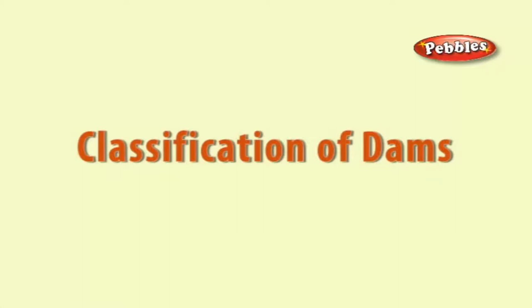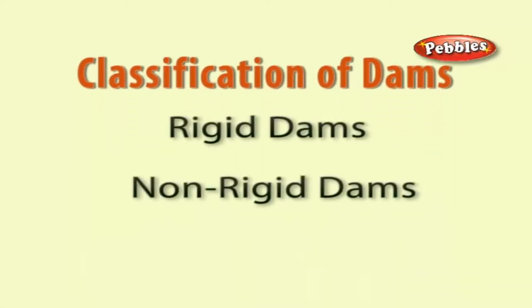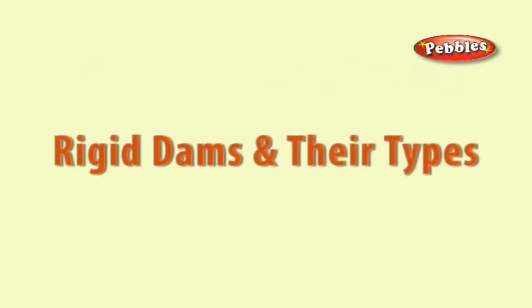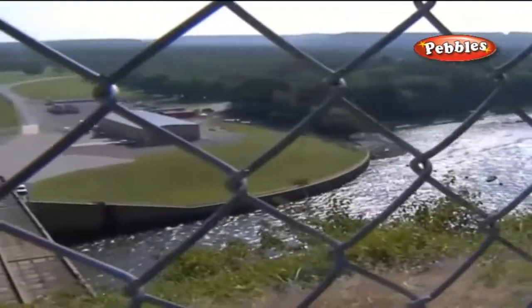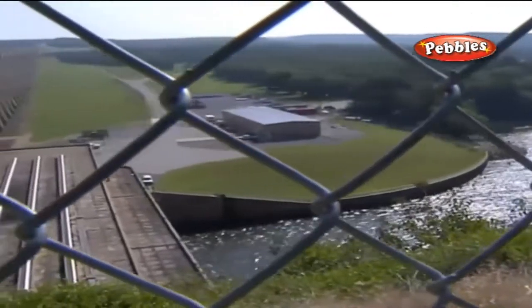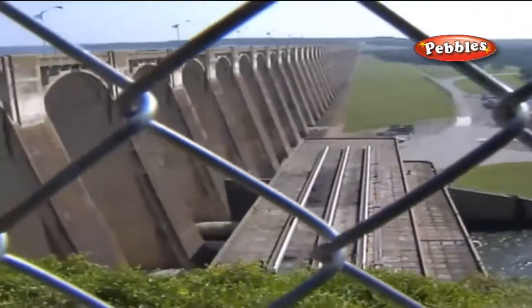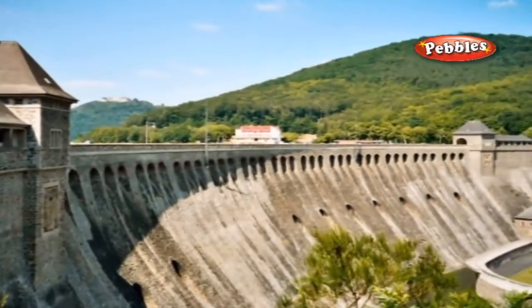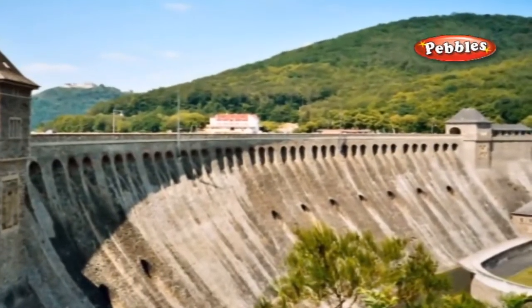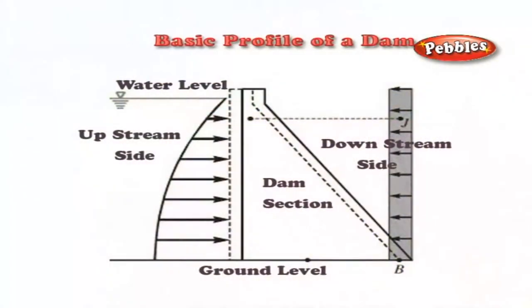Classification of Dams. Dams are broadly classified into two categories: rigid dams and non-rigid dams. As the name implies, rigid dams are constructed using rigid construction materials such as stone, brick, reinforced cement concrete, or plain cement concrete. The basic cross-sectional profile of a rigid dam is triangular, as shown in the figure.